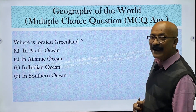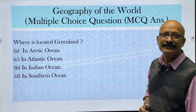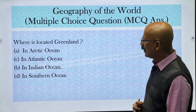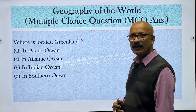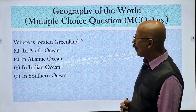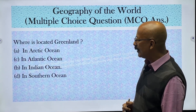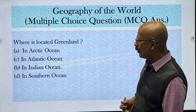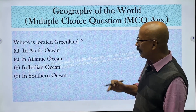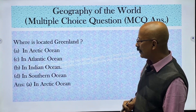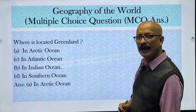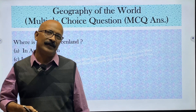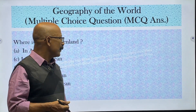Where is Greenland located? Greenland is on the northern tip of our globe — in the Arctic. So Atlantic, Indian, and Southern Oceans would not apply. The answer is the Arctic Ocean, because as the name suggests, the Arctic is on the northern tip.